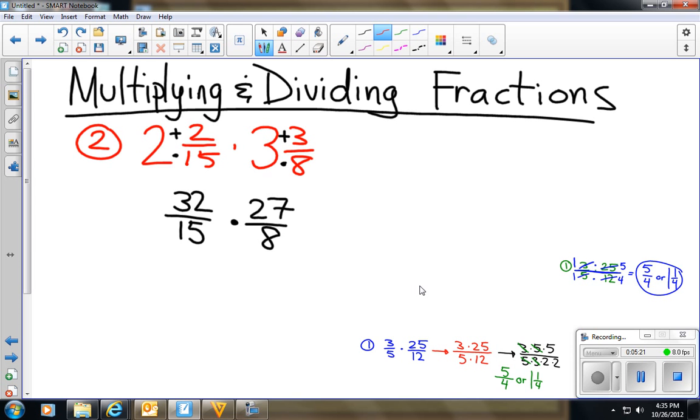So now we can go ahead and we can simplify. You don't want to be multiplying 32 by 27. That's way too much thinking. So I'm going to go ahead and divide 32 and 8 both by 8. So 32 divided by 8 is 4. And 8 divided by 8 is 1. 15 and 27. Although they may not look like they have a common factor, they do in fact have one. You can divide both of them by 3. 15 divided by 3 is 5. 27 divided by 3 is 9. And it looks like we have all the factoring out we can do. So we're going to do 4 times 9 is 36 over 5.